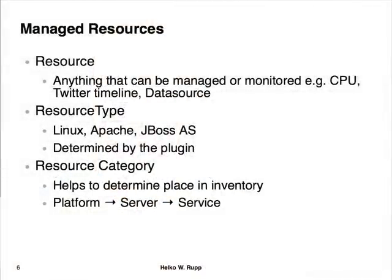A resource always has something called a resource type — each resource has a type. This could be a Linux host, an Apache web server, or a JBoss AS. This type is defined by the plugin that you write. We also have the resource category, which helps determine the place of the resource in your inventory tree. The inventory is organized in a tree or forest-like fashion. We have three categories: platform (the machine things run on), server (like a JBoss AS), and service (like a single data source). These categories are recursive — a server can contain another server. For example, JBoss AS has embedded Tomcat, and Tomcat is a server type.